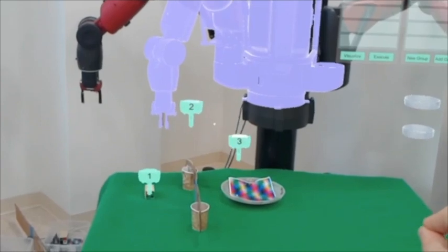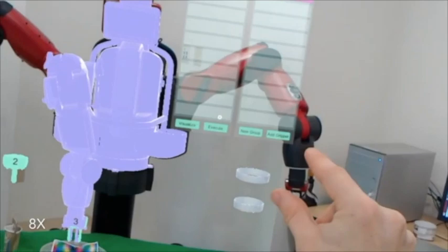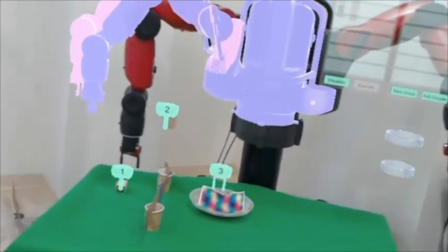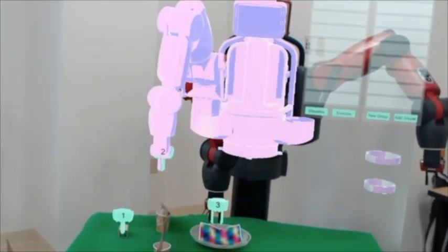To improve the collaborative experience between human and robot, the human is also able to visualize the motion intent of the robot. If the human wants the robot to perform the visualized motion, they can then execute that motion on the real robot.